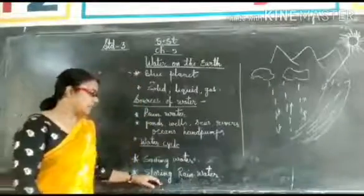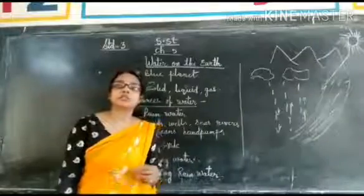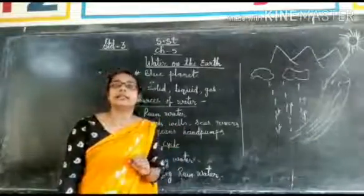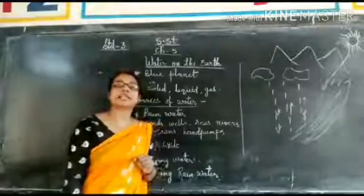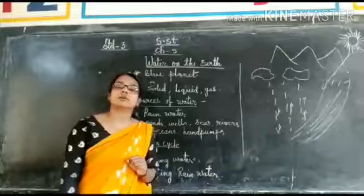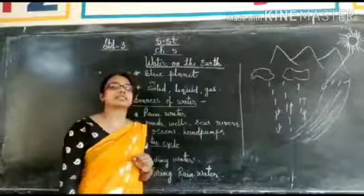Next topic is storing rain water. Rain water is the purest form of water. This is the water that we use for drinking and washing. So, we can collect and store rain water. Rain water can be collected in tanks and wells.